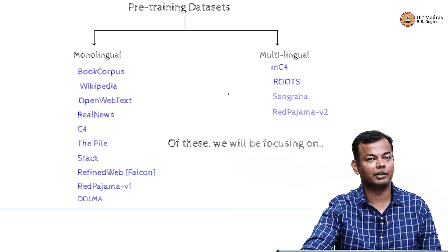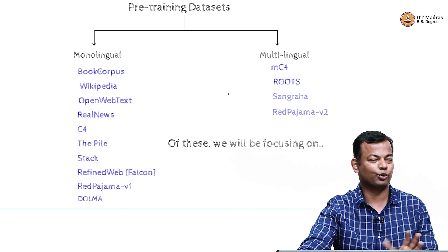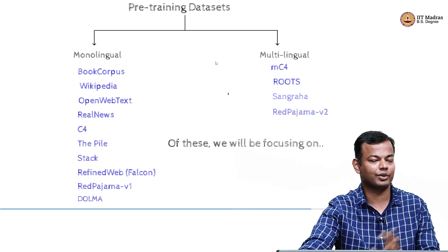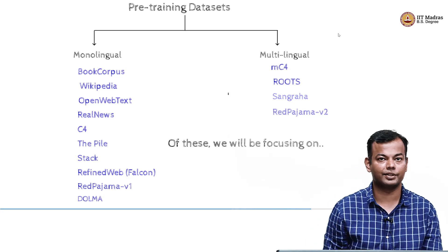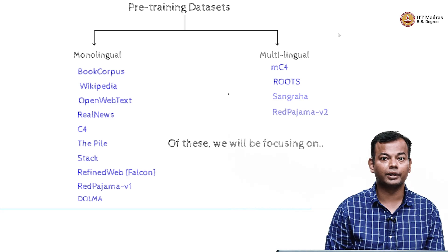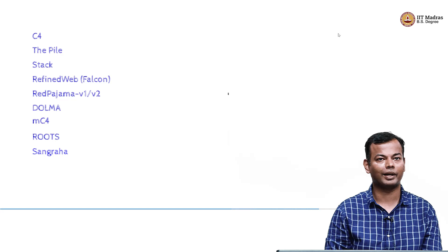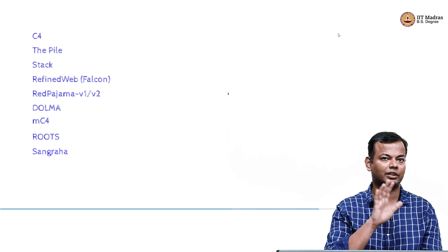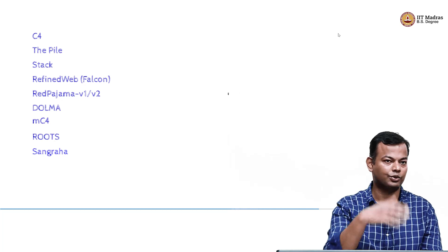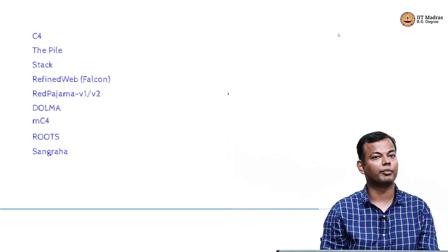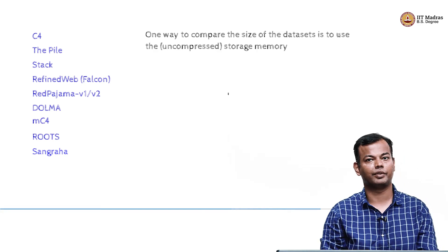We are taking the slight liberty of putting code datasets like Stack as monolingual, counting them as monolingual English, because code is largely you could think of it as English. Now we will look at some of these datasets — not all of them, but some of the popular ones — and that should cover what you need if you have plans to pre-train a model, or at least look at their pipelines and create your own dataset.